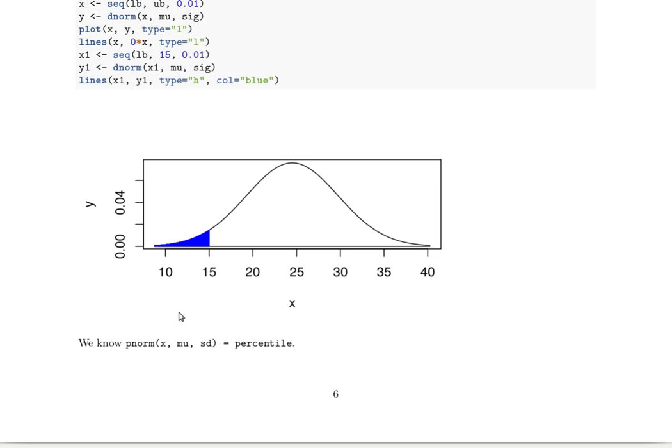We know that R has a command called the pNorm function. This pNorm function takes a quantile, some x values—say 15—in a normal distribution that has a mean of mu and whatever the standard deviation is of that normal distribution, and will give us the percentile, or in other words, the probability of something equal to 15 or less than 15.